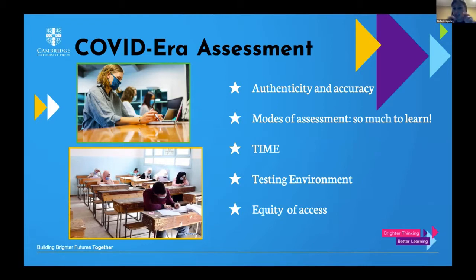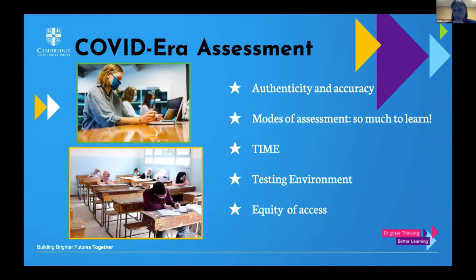A lot of districts played around with the idea of pass-fail in the springtime when we were up against a wall. Now the push is to go back to normal grading. So how can we think about grading in our new era? Some concerns include the authenticity of an exam — how do I make sure that it's my student who's taking it and not his parent or a tutor? We're trying to make sure we're accounting for the accuracy of what the student is putting in versus what we're trying to assess.